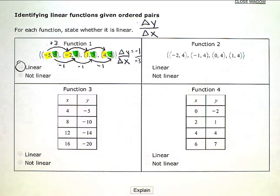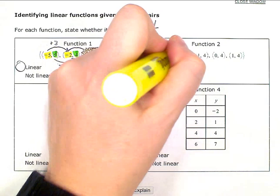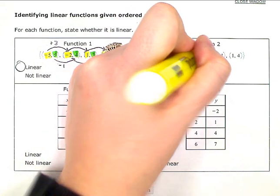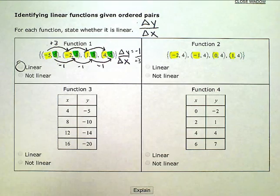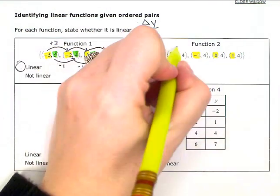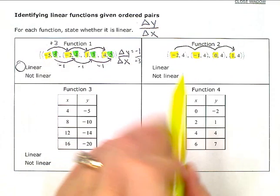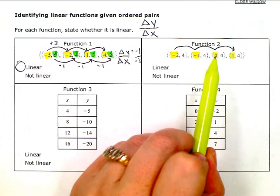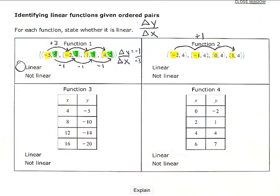All right, but let's look at this one. So again, we're going to look at just the x values. So from negative 2 to negative 1, I added 1. And from negative 1 to 0, I added 1. And from 0 to 1, I added 1. So this was a consistent add 1 pattern for my x's.